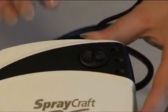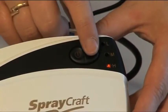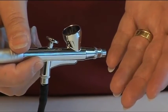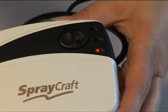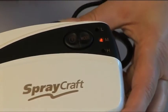Turn the airbrush compressor on by pressing this button. The red light should come on. Air should be coming out of the airbrush. By pressing the button you can change the setting to go high, medium or low.